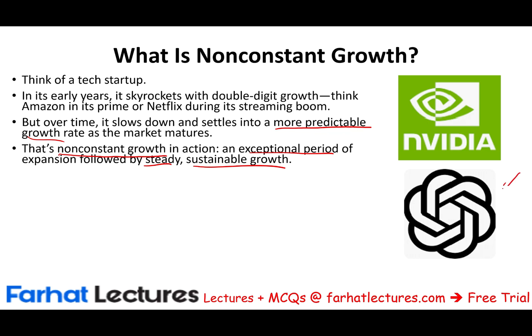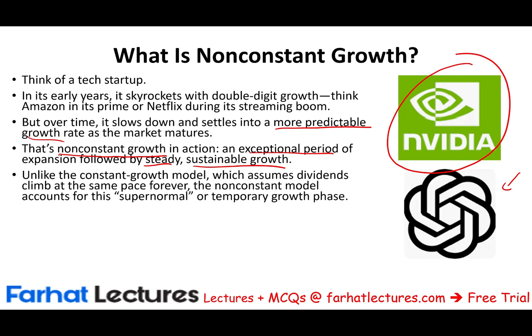For example, ChatGPT — that's what it's going through now. From a users' perspective, it's skyrocketing. Eventually, at some point, ChatGPT will start to flatten. Same thing NVIDIA is going through right now because of the AI boom — it's growing double-digit, but it cannot go like this forever. So unlike the constant growth model, which assumes dividends climb at the same pace forever, the non-constant model accounts for this supernormal or temporary growth phase.